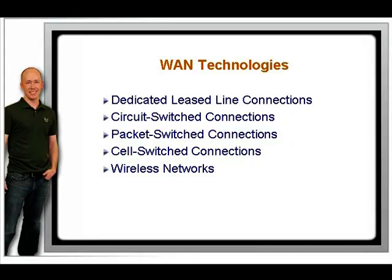A leased line refers to a connection that is installed and provisioned for the exclusive use of the customer. When you order a leased line, you get your very own piece of wire from your location to the service provider's network. This is good because no other customer can affect your line, and you have a lot of control over this circuit for things such as quality of service and other traffic management. The downside is that a leased line is expensive and gets more expensive if you need to connect offices that are far apart. A leased line is typically a point-to-point connection from the head office to a branch office.